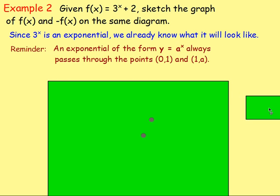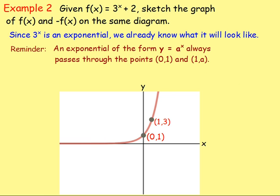A reminder, an exponential of that form, if you have y equals some number to the power of x, it will always pass through the point 0, 1, and then 1, a. So this equation here, with 3 to the power of x, will pass through 1, 3. We haven't done anything with the plus 2 yet. We've just sketched that exponential, y equals 3 to the power of x. The plus 2.